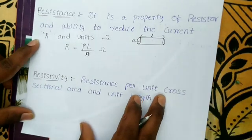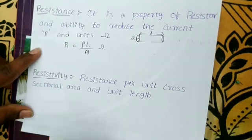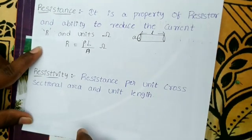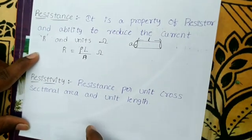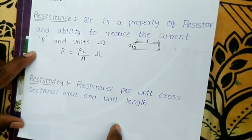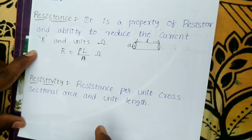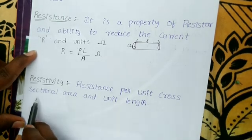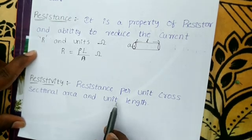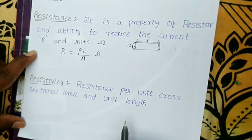Next is Resistivity. Resistivity is defined as resistance per unit cross-sectional area and unit length. It is a property dependent on the material itself.